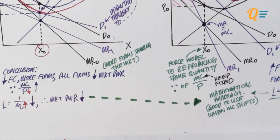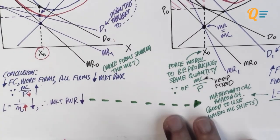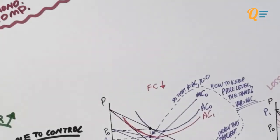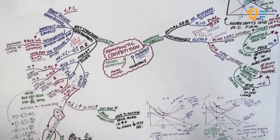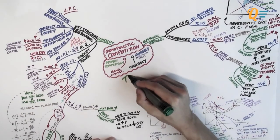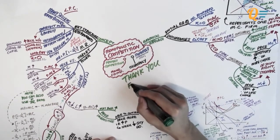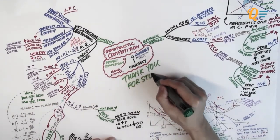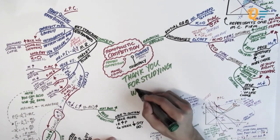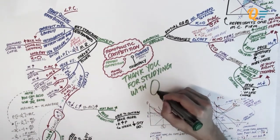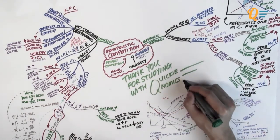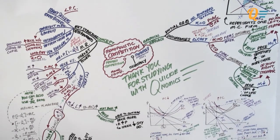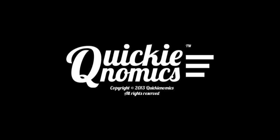That is the mathematical approach to solving monopolistic competition questions. If you encounter a case where you need to shift the marginal cost curve and cannot force the model to stay at X0, use the mathematical model — the Lerner's Index. This has been a fairly short video, and thank you for starting with Quickenomics.